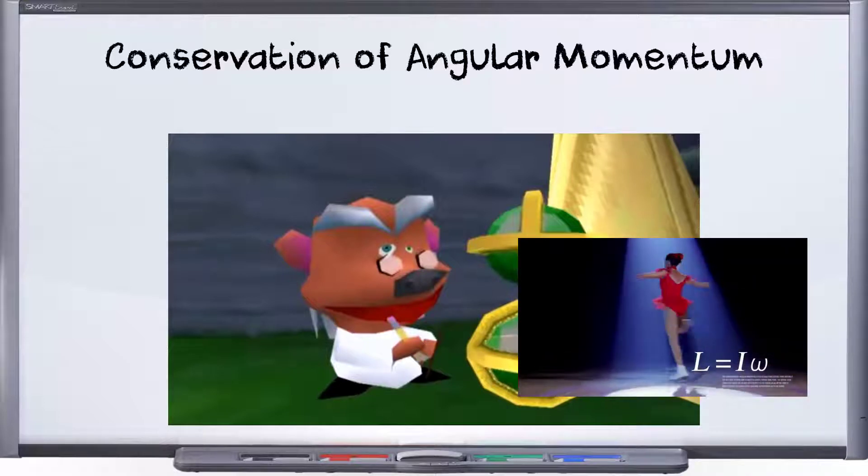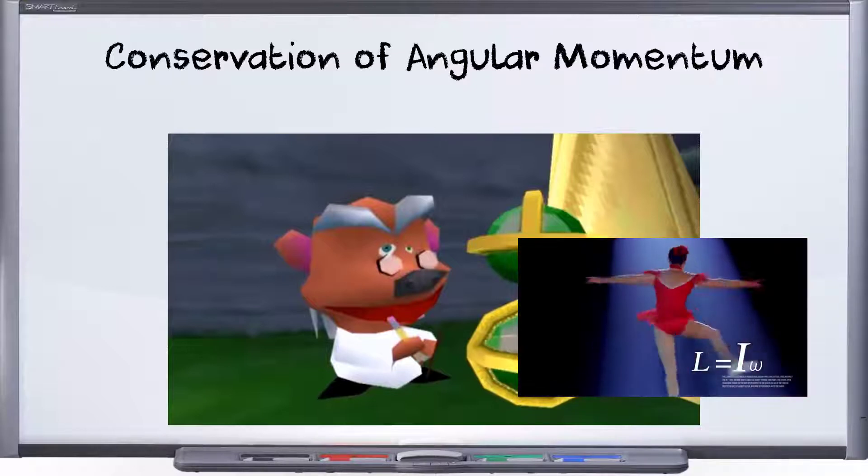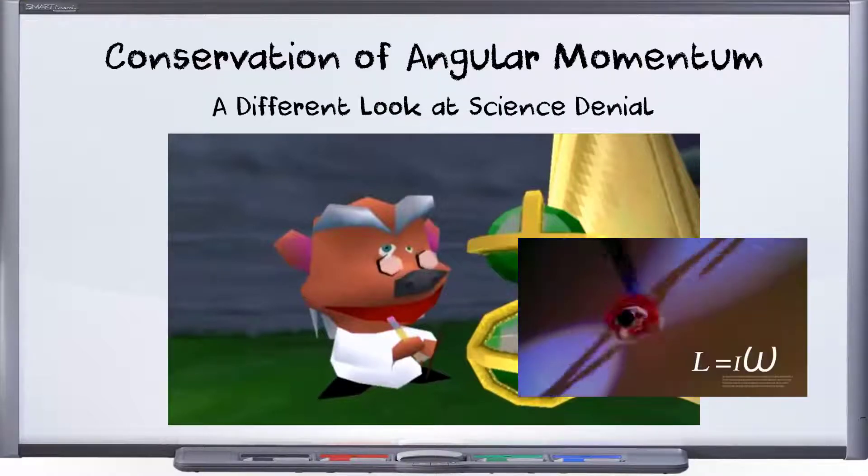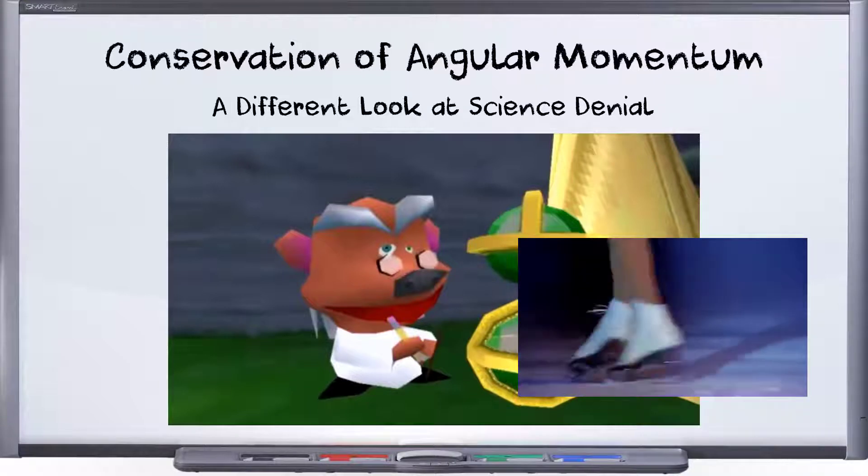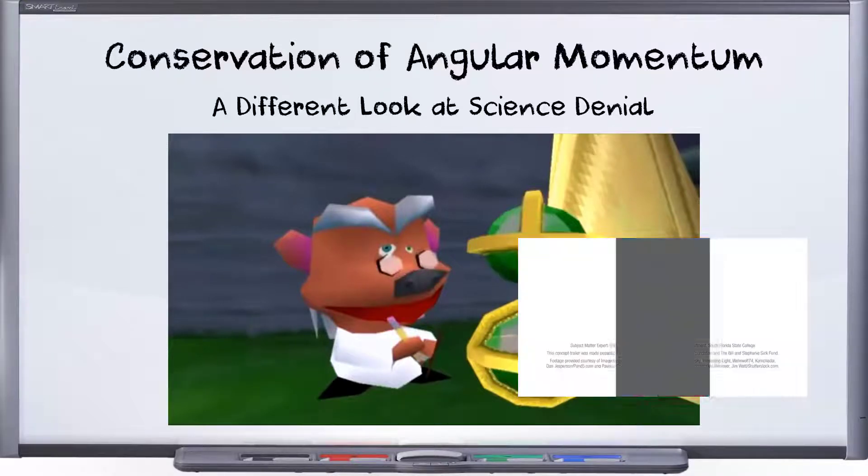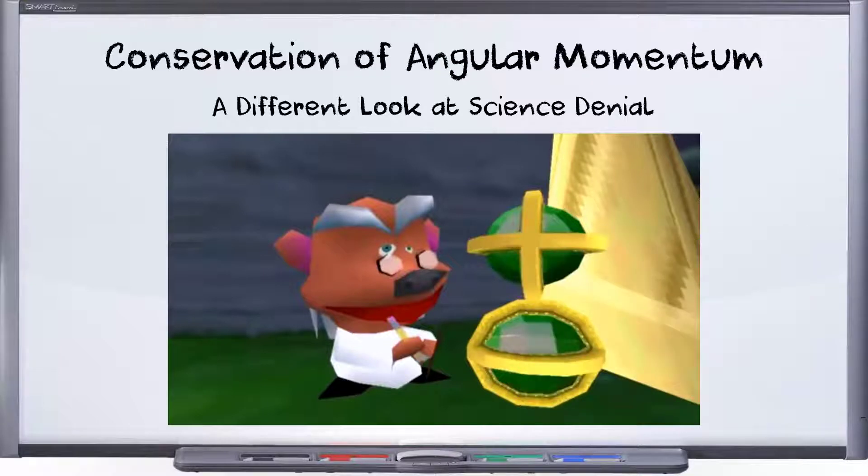You may have heard before the conservation of angular momentum. You've probably heard this in terms of an ice skater pulling their arms in and you see that they spin much faster. But have you heard that there's someone out there who's convinced that this is fake? Here's a little bit of a different look at science denial. This won't be flat earth this time. Just an example of how this same idea crops up in different ways.